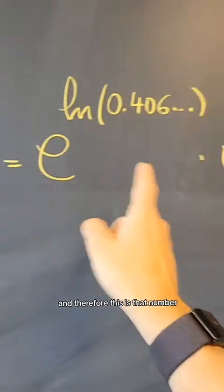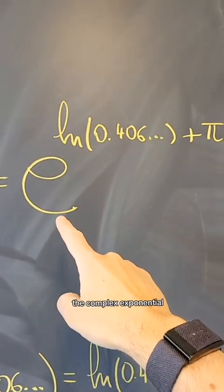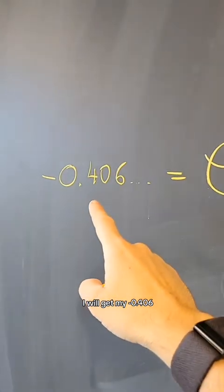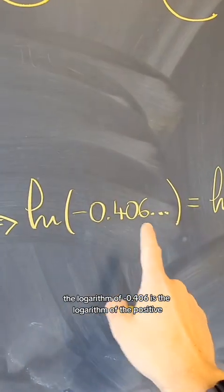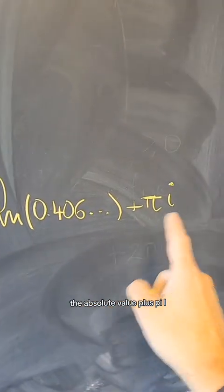And therefore, this is that number. In other words, if I raise e, the complex exponential e, to this complex number, I will get my minus 0.406. Or in other words, the logarithm of minus 0.406 is the logarithm of the positive, the absolute value, plus pi i.